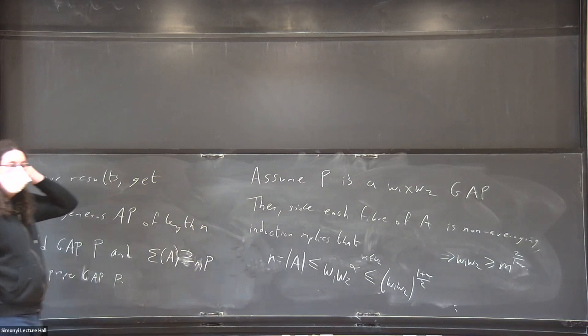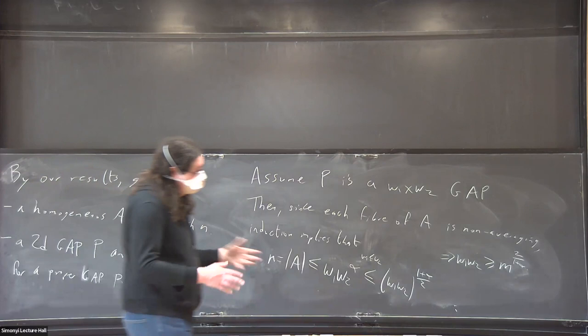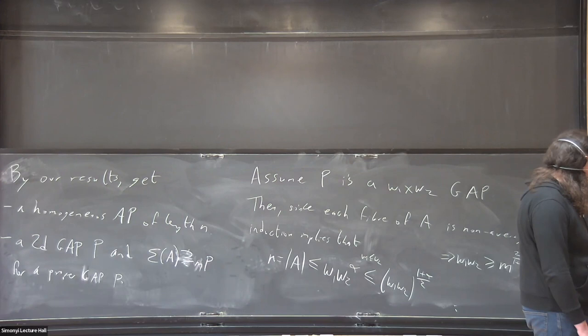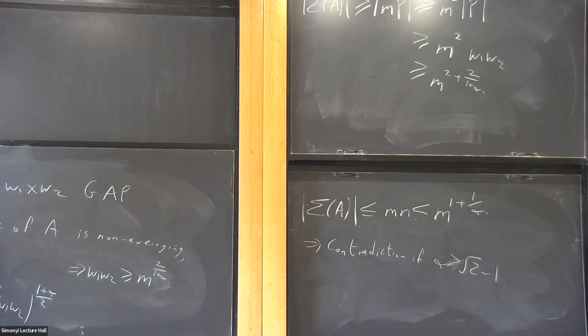In terms of open problems, at least from the non-averaging perspective, the main open problem is: what is the real answer? The right answer is probably N to the one-quarter. It seems a very natural example, but it seems like extra work is going to be needed beyond what we've done to actually get there.